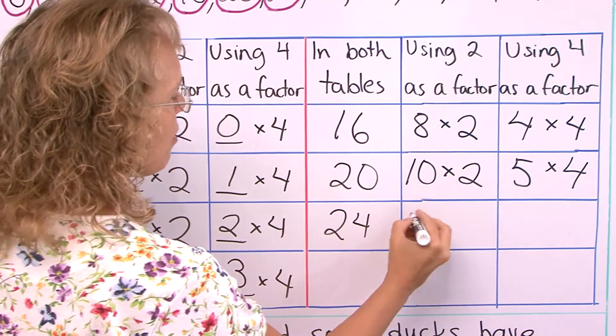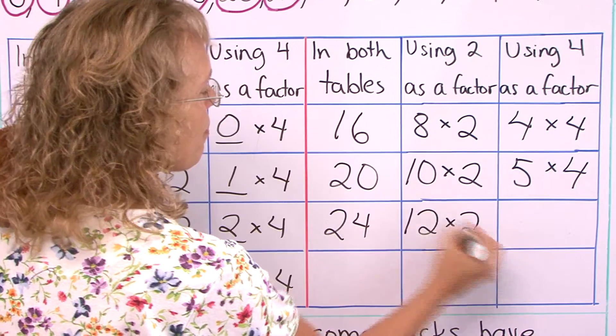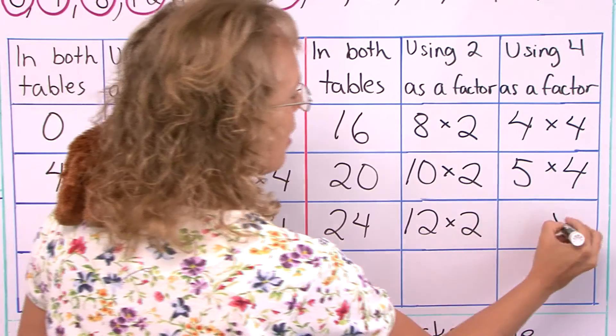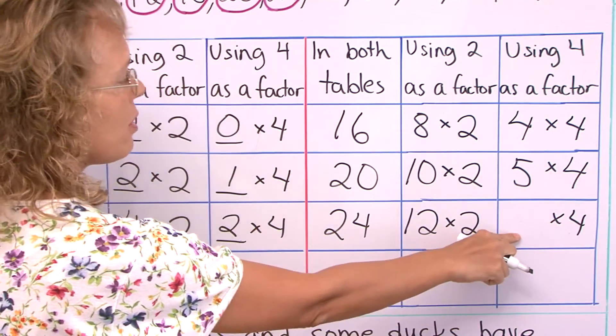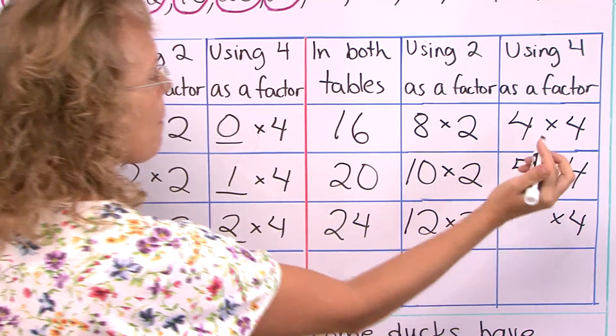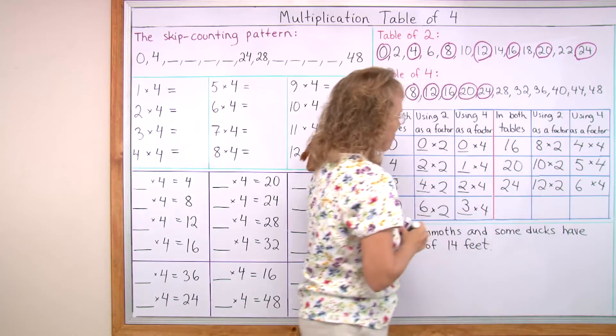And then 24 is 12 times 2. And this one — how many times 4? 6 times 4.